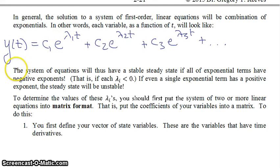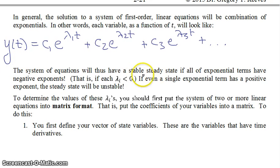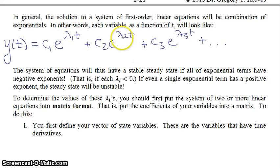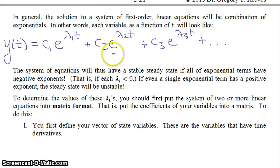In order to have a stable steady state for a system of first order differential equations, all of the exponential terms have to have negative exponents. If any of these lambdas are greater than zero, then that exponential term will dominate over time and you will have an unstable steady state.